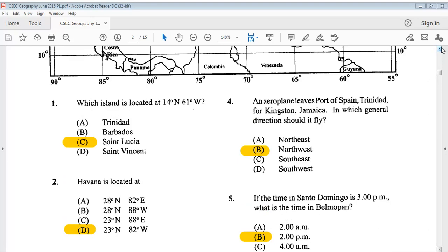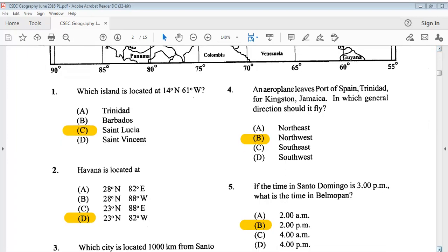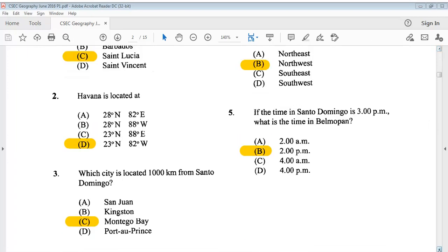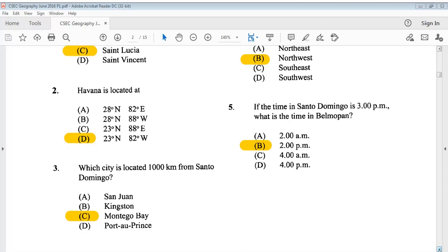Question 4: An airplane leaves Port of Spain, Trinidad, for Kingston, Jamaica. In which general direction should it fly? According to the map, B, northwest. Question 5 says, if the time in Santo Domingo is 3 p.m., what is the time in Belmopan? The answer is B, 2 p.m.